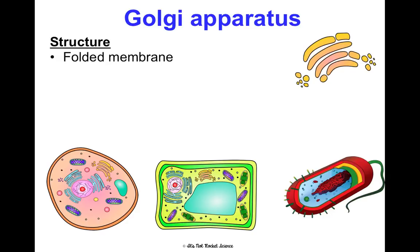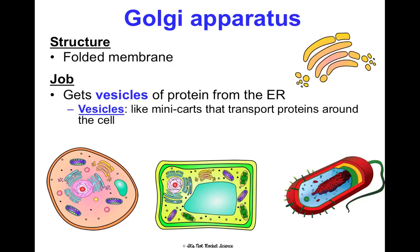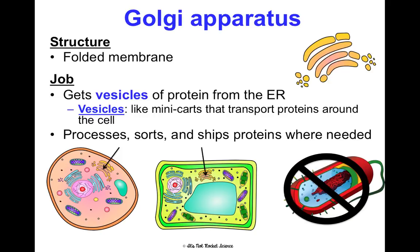The Golgi apparatus is a bunch of folded membrane that looks similar to the ER, but it's not attached to the nucleus. Its job is to receive vesicles of protein from the ER — these vesicles are like mini carts that move proteins around. We call the Golgi a packaging center: it takes proteins made by ribosomes on the rough ER and in the cytoplasm, then processes, sorts, and ships them in vesicles to where they need to go. It's in animal and plant cells, not in prokaryotic cells.